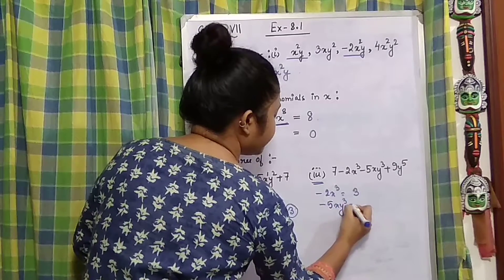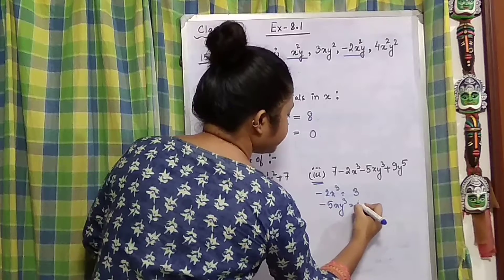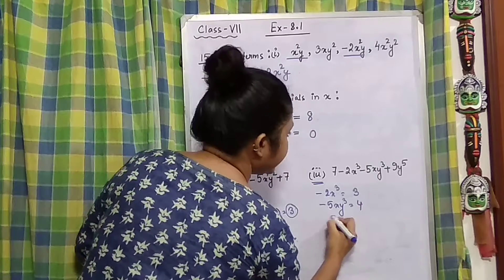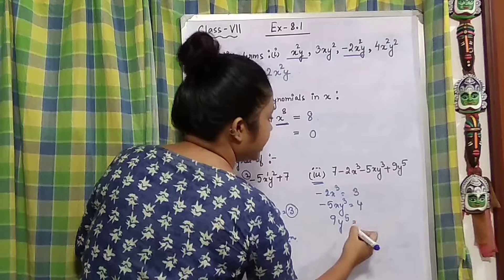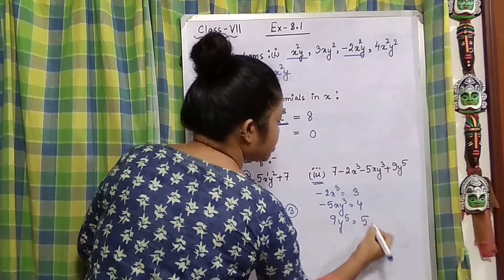5xy³ - here the degree will be 4. And in 9y⁵, the degree will be 5.